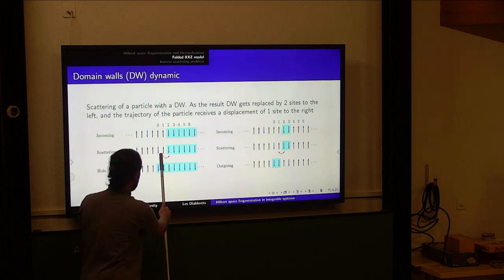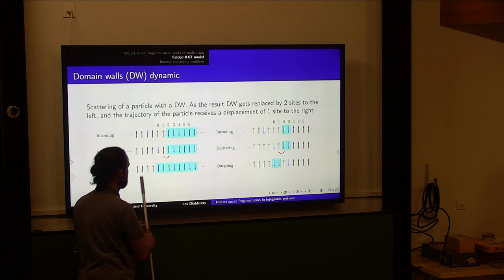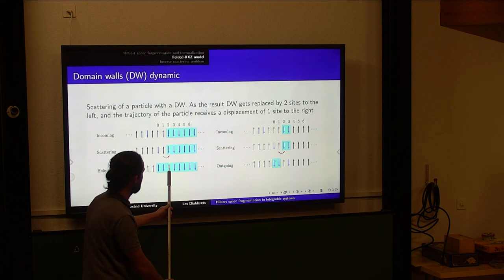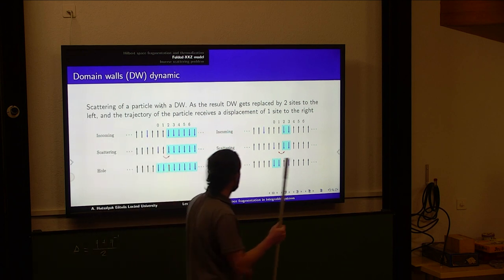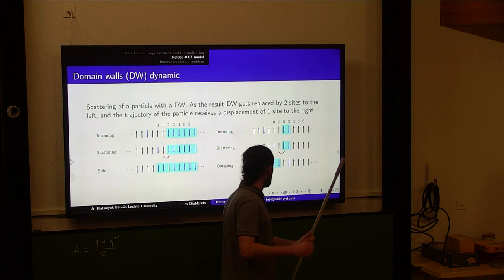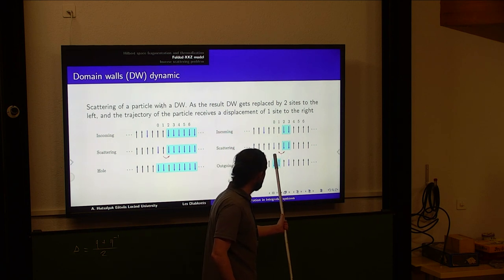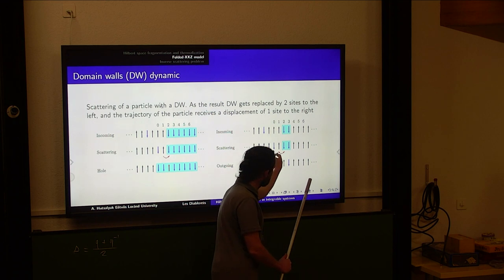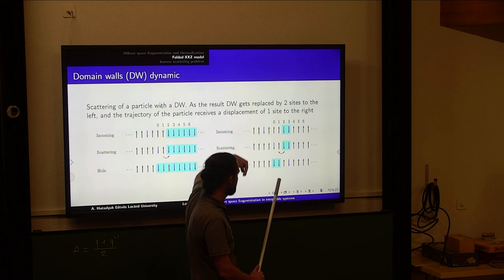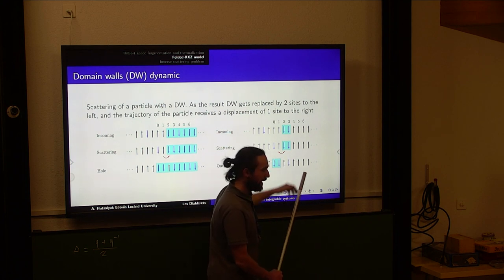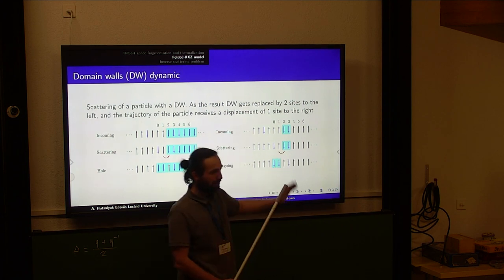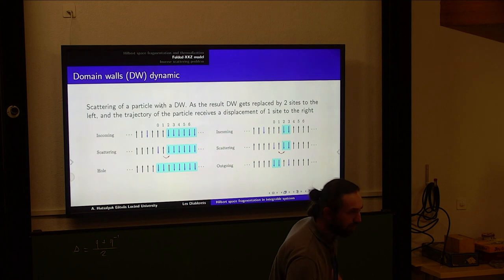What can happen is that two particles fuse into a new small domain wall, and this propagates to another side. Another process is scattering of a single particle with a small domain wall: the particle cannot fuse with it but can jump over the domain wall. In this process the domain wall obtains a shift in position, and the particle's trajectory is also shifted by one site.